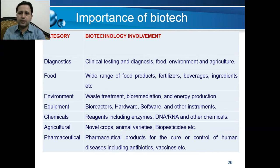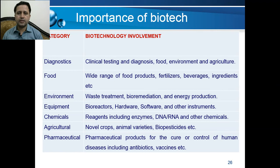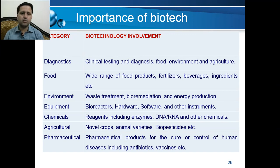A wide range of food products, fertilizers, beverages, and ingredients are produced through biotechnology. In the environment, biotechnology is used for bioremediation, waste treatment, and bioenergy production. Equipment such as bioreactors, hardware, software, and instruments are produced. Many chemicals like enzymes, DNA and RNA probes, novel crops, animal varieties, biopesticides, and biopharmaceuticals for the cure or control of human diseases — including antibiotics, vaccines, and insulin — are produced. This concludes the topic of introduction to biotechnology.